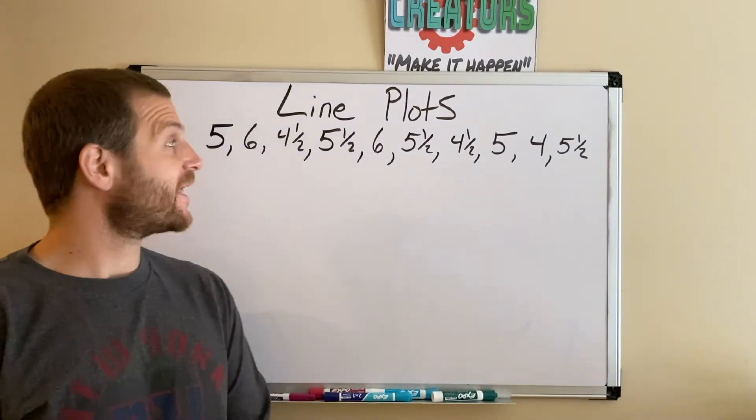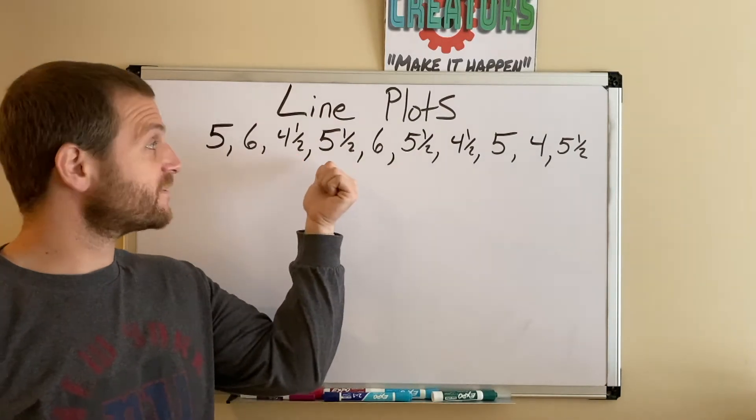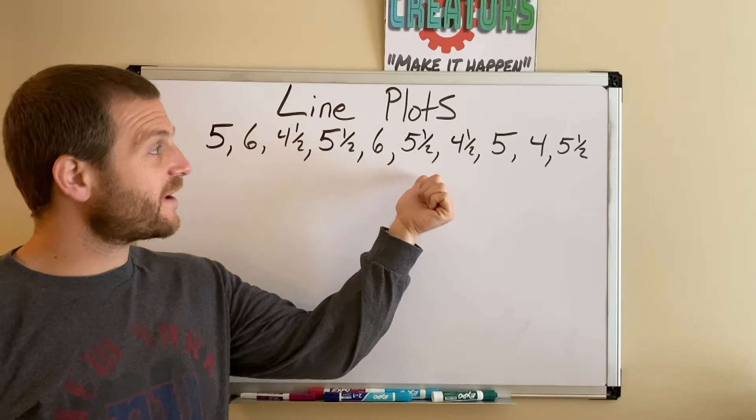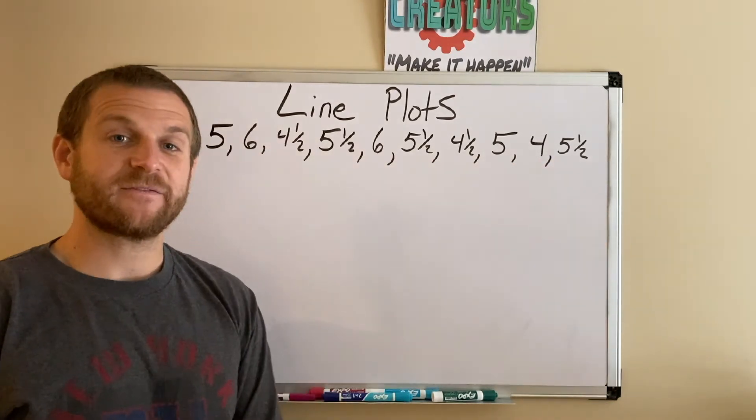Here's the numbers of how long it took the class to say the alphabet: 5 seconds, 6 seconds, 4½ seconds, 5½, 6, 5½, 4½, 5, 4, and 5½.